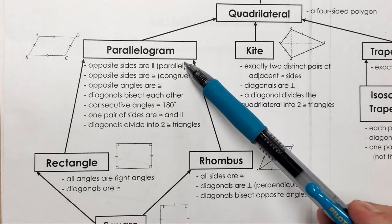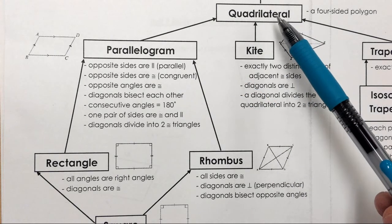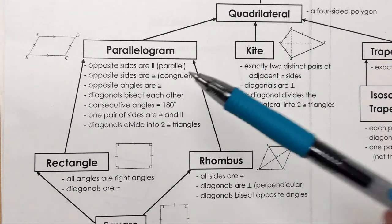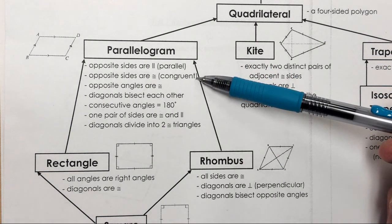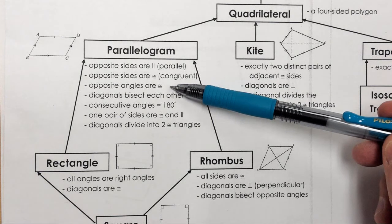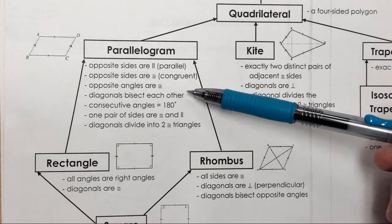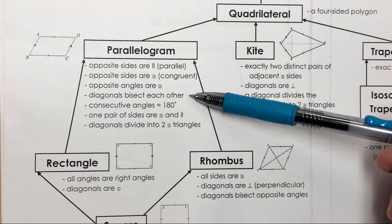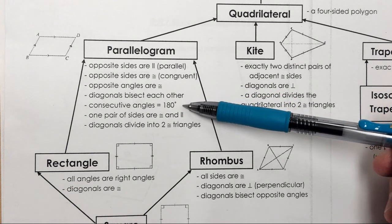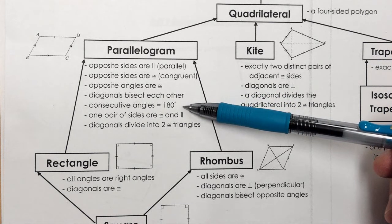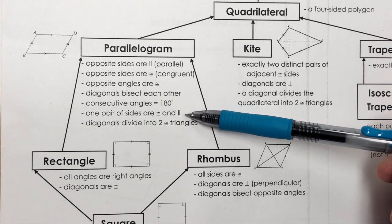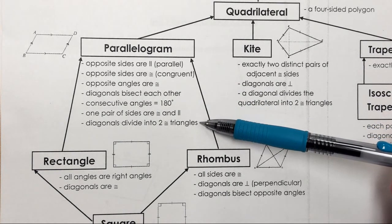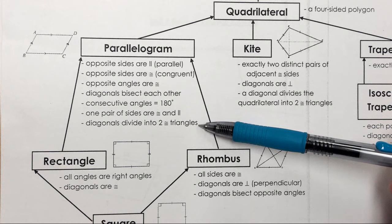Parallelograms have seven properties. They're quadrilaterals first and foremost, which means they have four sides. But beyond that, opposite sides are parallel. Opposite sides are congruent. Opposite angles are congruent. The diagonals bisect each other, so they cut each other in half. Also, consecutive angles add up to 180 degrees. We have one pair of sides that is both congruent and parallel. And lastly, the diagonals divide the parallelogram into two congruent triangles.